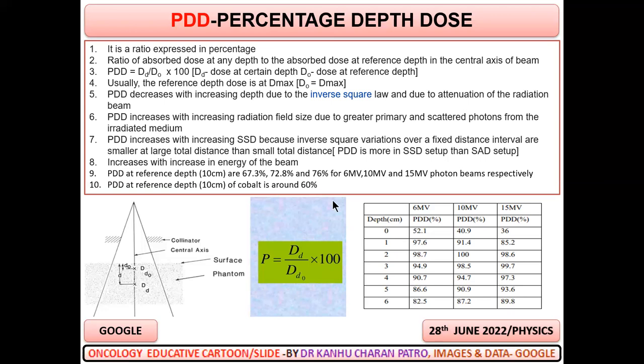You can see here the various percentage depth dose values at various depths for 6 MV, 10 MV, and 15 MV, given as an example.